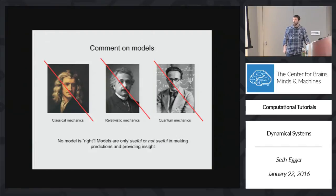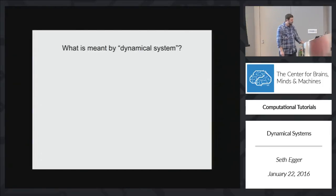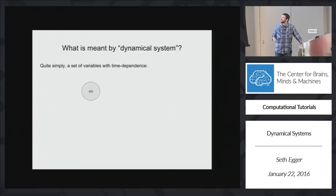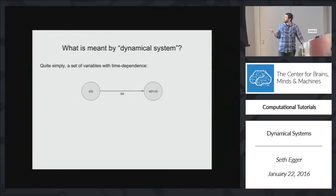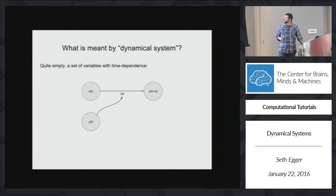So always keep that in mind when you are modeling. Now, that digression aside, let's talk about what we mean when we say a dynamical system. It's really quite a simple concept. We just have some variable, say x, and that variable might change over time. So if we take some short time step delta t, x will change by some amount delta x. And we can imagine there's another variable y, and y actually controls what delta x is through some generally nonlinear function f.